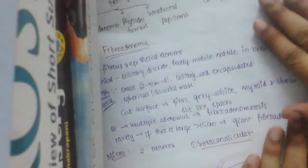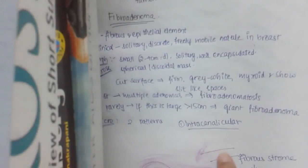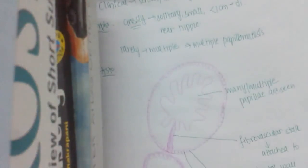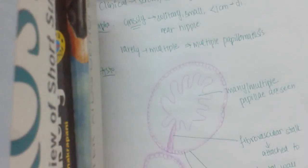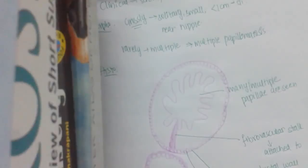Today we completed all the benign lesions of the breast, which include fibroadenoma — with two patterns: intracanalicular and pericanalicular — as well as Phyllodes Tumor and intraductal papilloma. In the next class, we will learn about carcinoma of the breast, which may take two to three classes to cover.